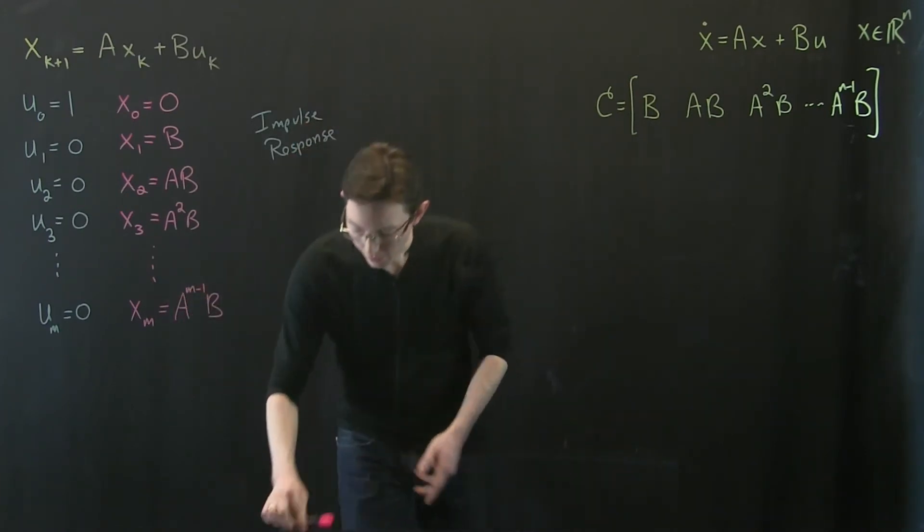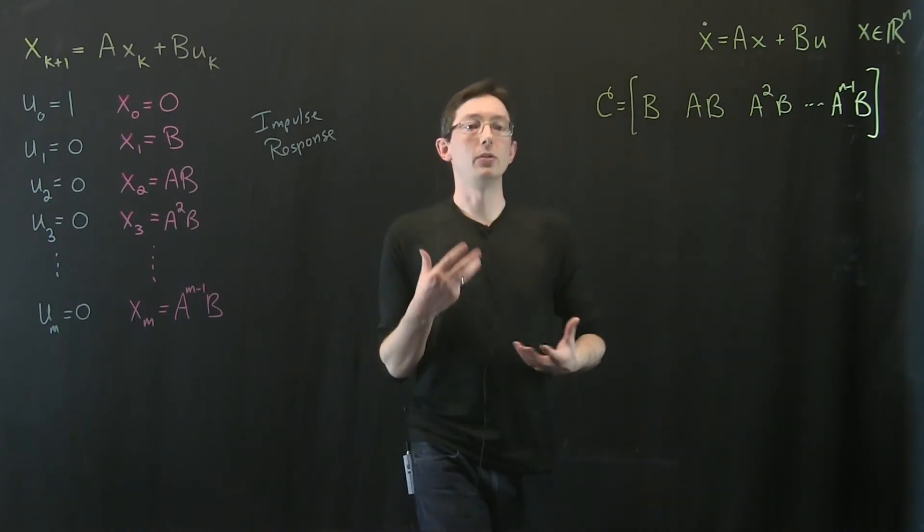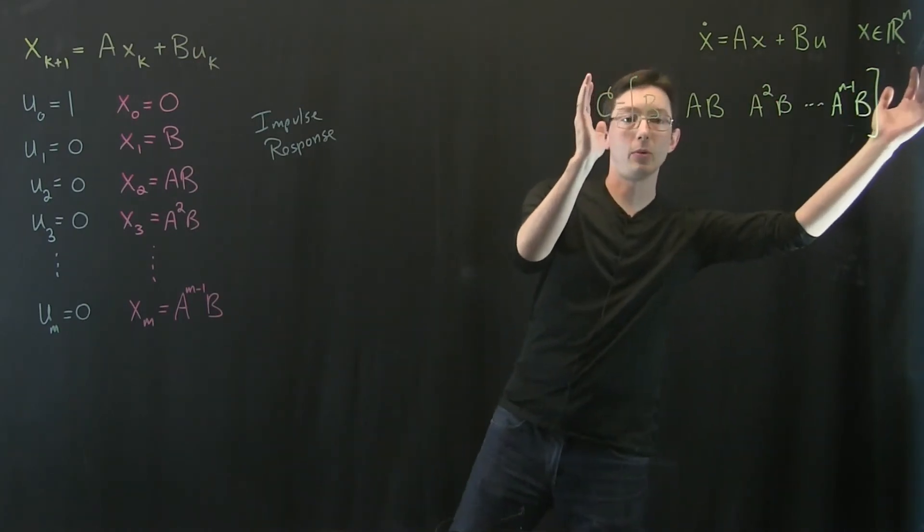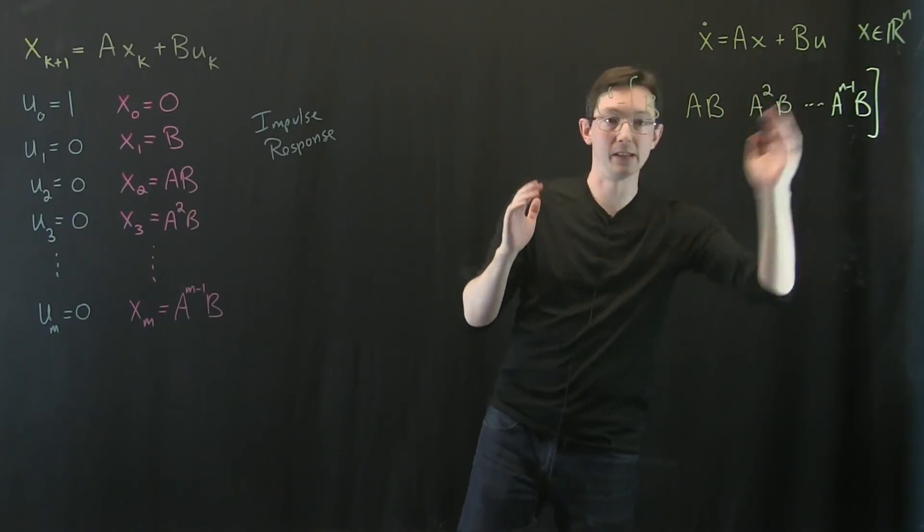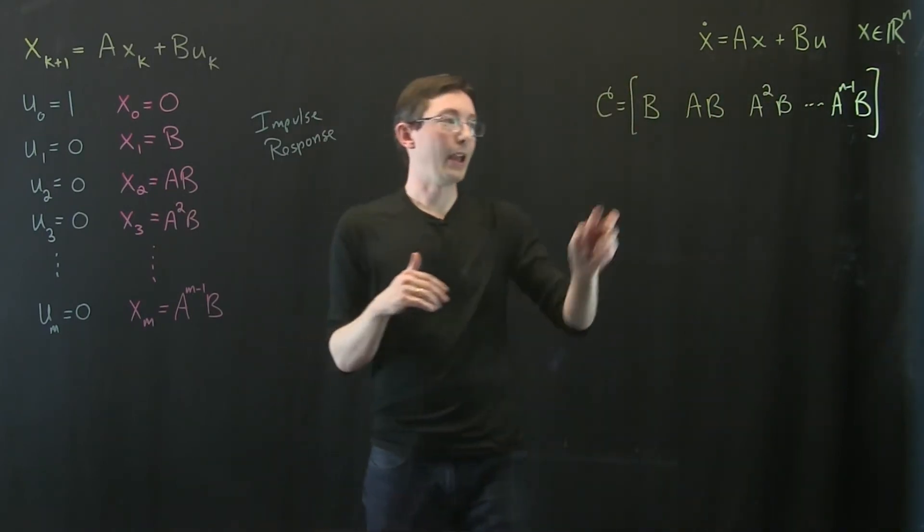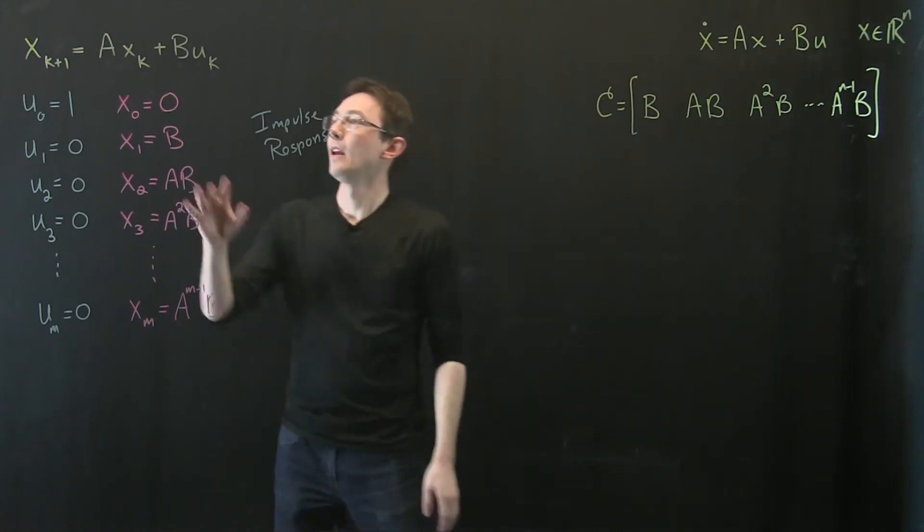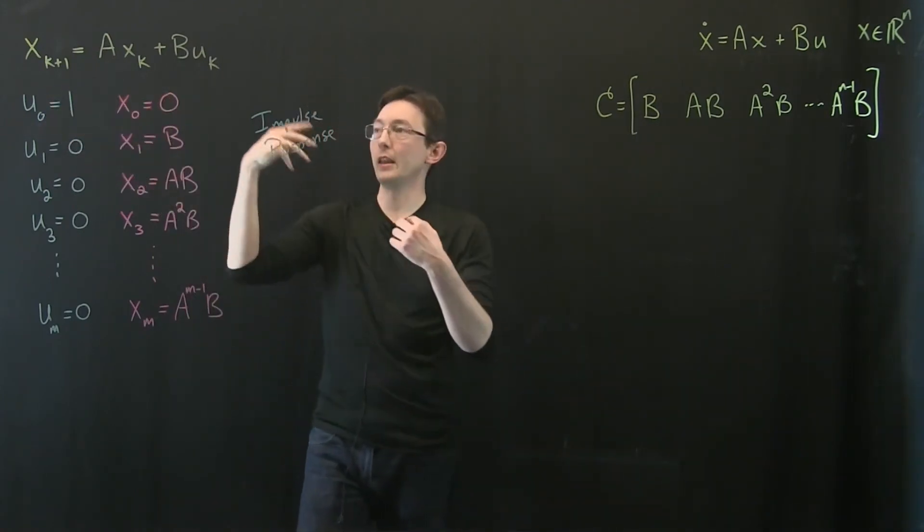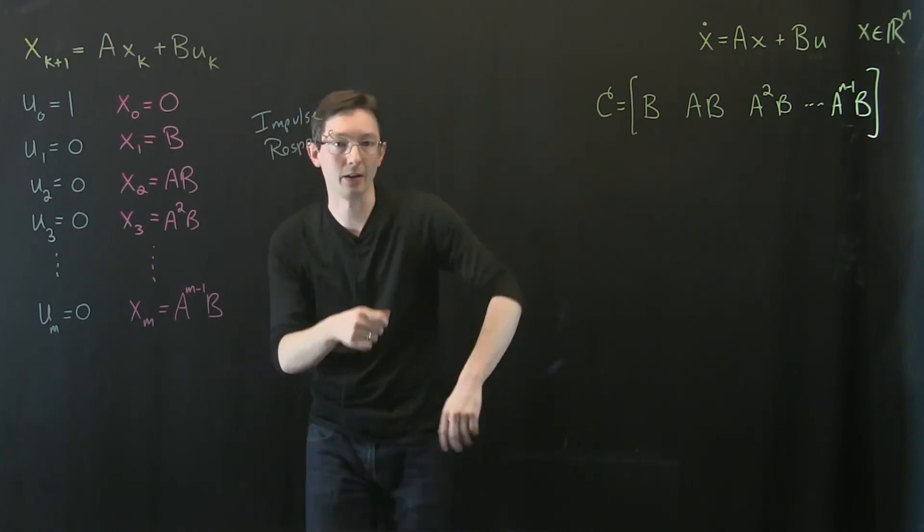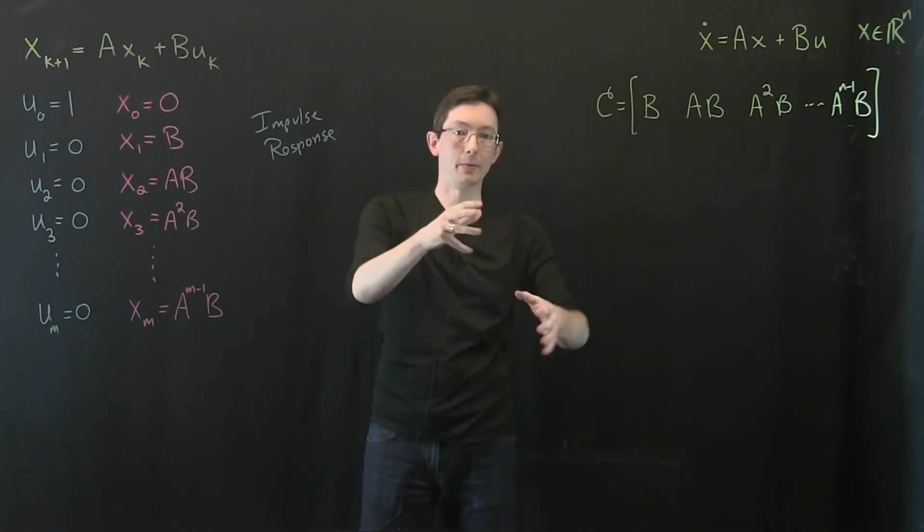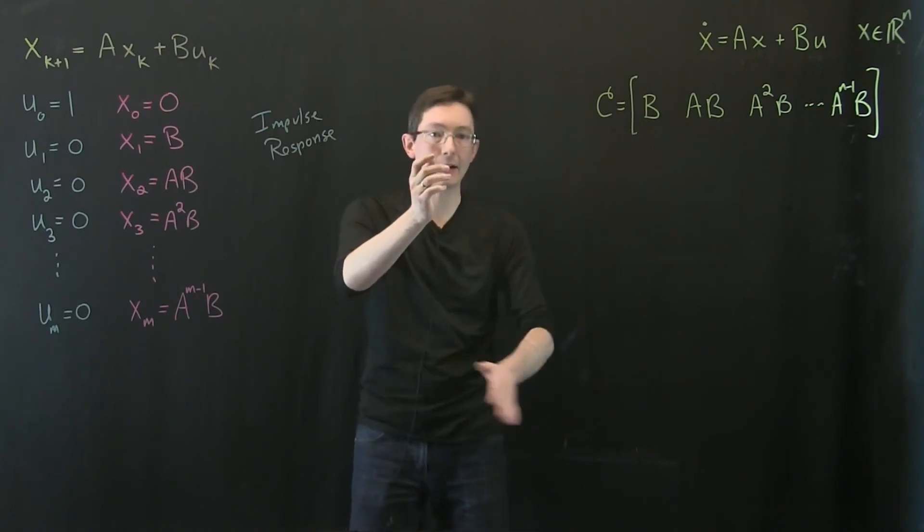Okay and so this should at least give you some intuition for why this is an important matrix or at least this subspace. This subspace generated by a and b is interesting because at least in discrete time if I give the system a kick. So let's say I have a physical system like my pendulum hanging down and I literally hit it with a hammer so I excite that thing and I see how it moves.